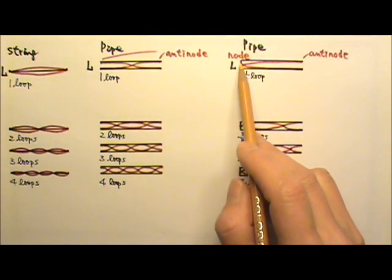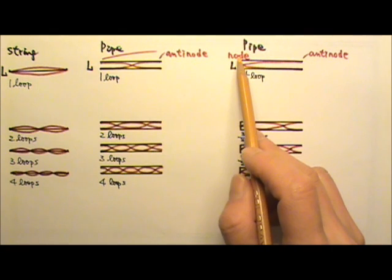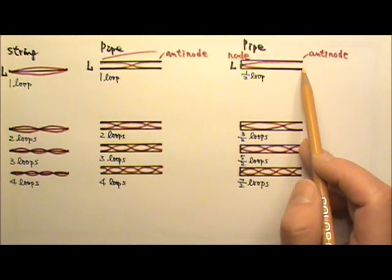And for an organ pipe that's closed at one end, at the closed end, air molecules cannot move in and out. That means over here we have to have node, and on the open end we have anti-node.